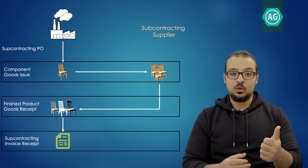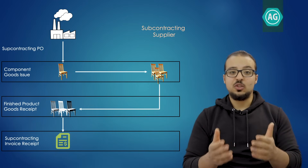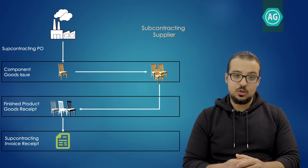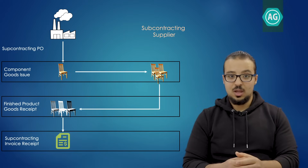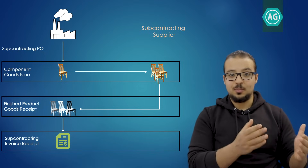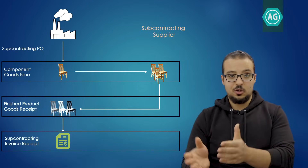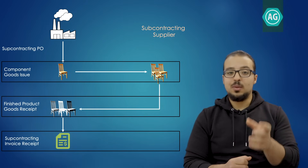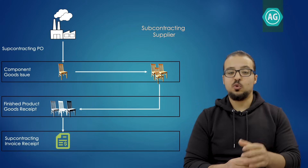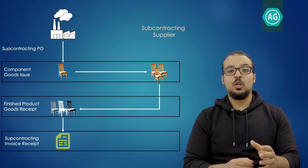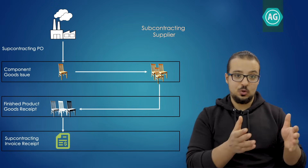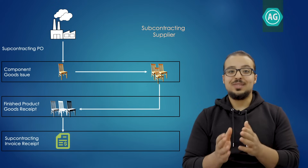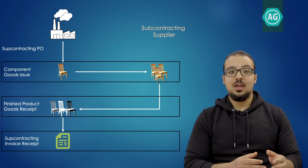Let's look at the different steps in the process. Step one: we create a purchase order to the subcontracting vendor for the painting service — the value in the PO is the value of the service only, not the product, because we own the chairs. Step two: we issue the unpainted chairs to the supplier. Step three: we receive the painted chairs back from the supplier. Step four: we post the invoice for the subcontracting service.